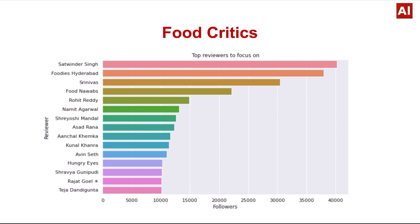Food critics — top reviewers on Zomato: the x-axis represents followers and the y-axis represents reviewer names. Satvinder Singh, Foodie Hyderabad, and Siri Nivas are the top three reviewers who review hotels and restaurants. Satvinder Singh has the most number of followers, which is about 40,000.